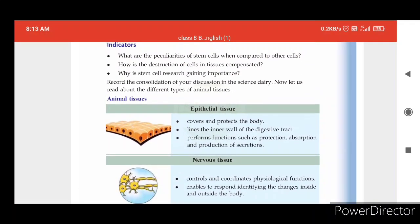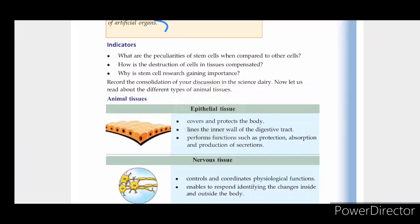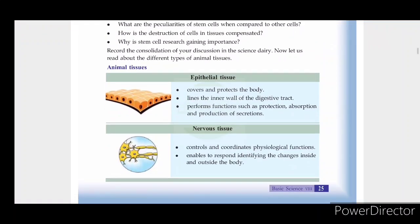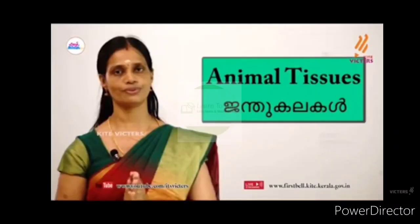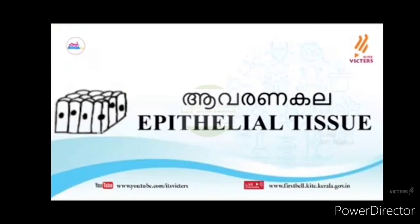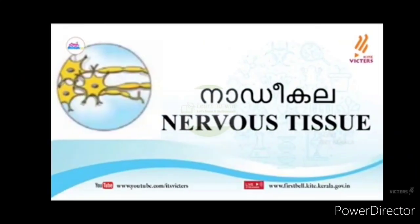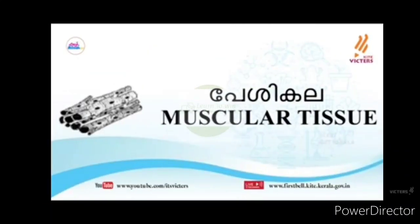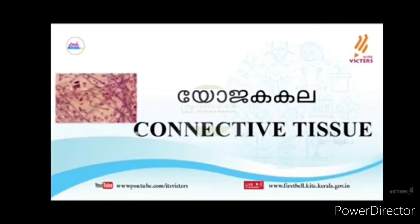Now let us look at the different types of animal tissues. Animal tissues are divided into four types: epithelial tissues, nervous tissues, muscular tissues, and connective tissues.